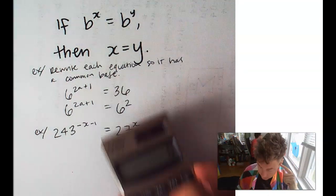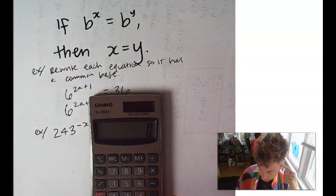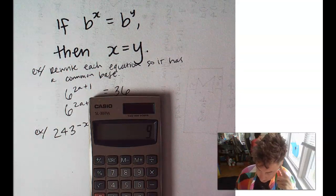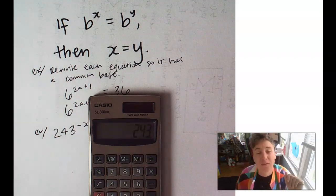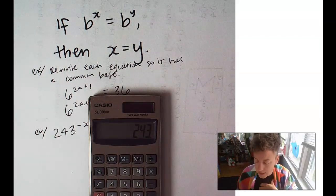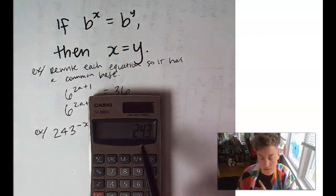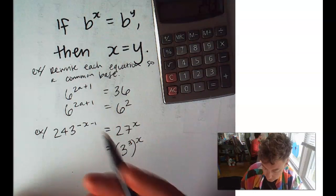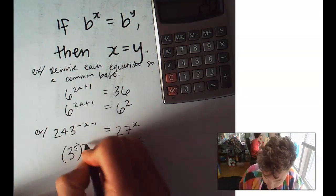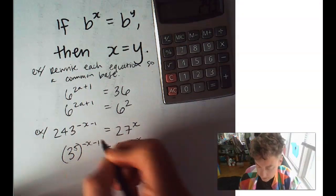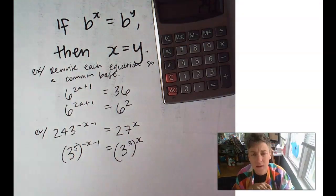And 243, how many 3's is that? 3 times 3 is 9 times 3 is 27. That's to the 3rd, that's to the 4th, that's to the 5th. So, 3 to the 5th is 243. So, this is 3 to the 5th to the negative x minus 1. Fabulous.